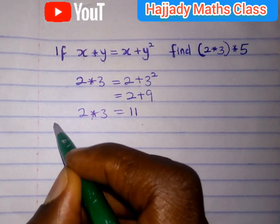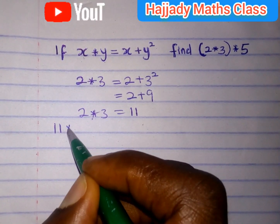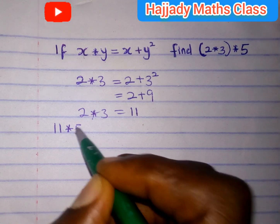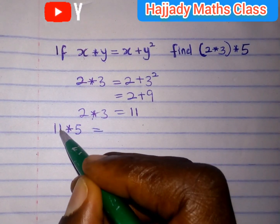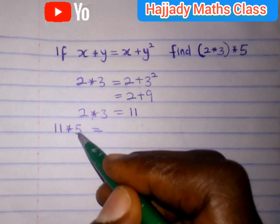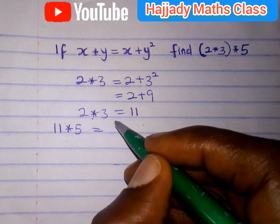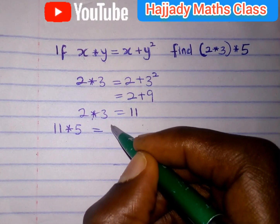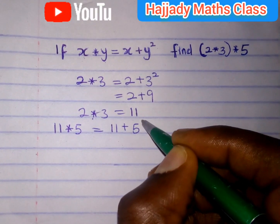So, we are replacing 2★3 with the value 11. So here we have 11★5. Now, 11 is going to take the place of x as well, while 5 takes the place of y. So, in this case, we have 11 plus 5 raised to power 2.